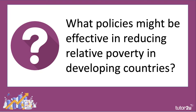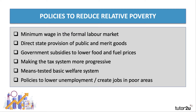Here's a question to think about: what policies might be effective in reducing relative poverty in developing and emerging countries? Relative poverty occurs when people have income significantly below the median income for their society. Policies designed to reduce inequality are often influenced by a desire to achieve horizontal and vertical equity - in other words, to give people fundamentally increased opportunities within their economies.